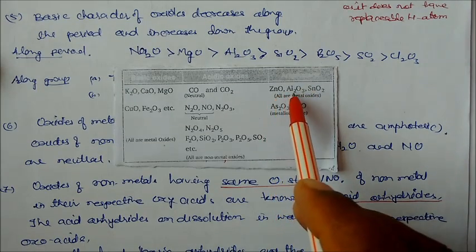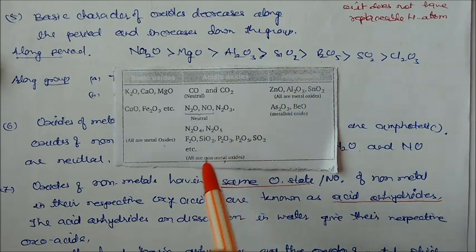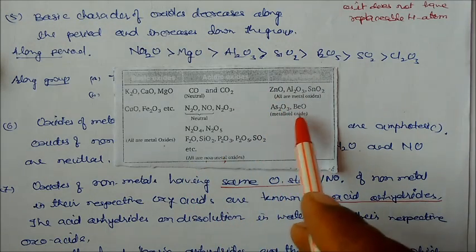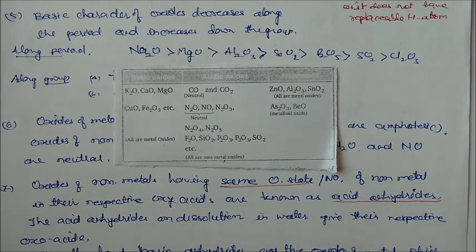These are the amphoteric oxides. Amphoteric oxide means which can react with acid or they can react with base. Zinc oxide, Al2O3, SnO2, these metal oxides are amphoteric oxides. Metallic oxides are BeO or beryllium oxide. So these oxides are amphoteric oxides.